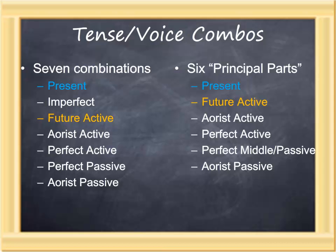These tense-voice combinations yield six principal parts for the Greek verb: the present, future active, aorist active, perfect active, perfect middle passive, and the aorist passive. Again, we have focused on the present and the future.